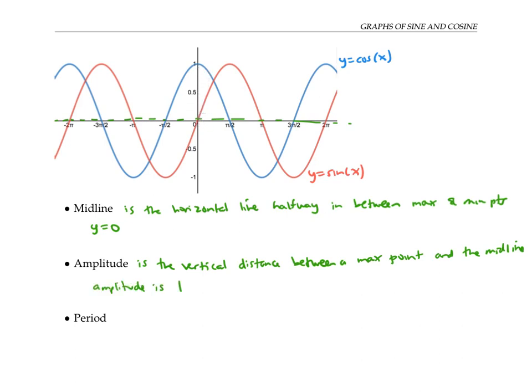A periodic function is a function that repeats at regular horizontal intervals. The horizontal length of the smallest repeating unit is called the period. For y equals cosine of x, the period is two pi. Notice that the period is the horizontal distance between successive peaks, or maximum points, or between successive troughs, or minimum points.